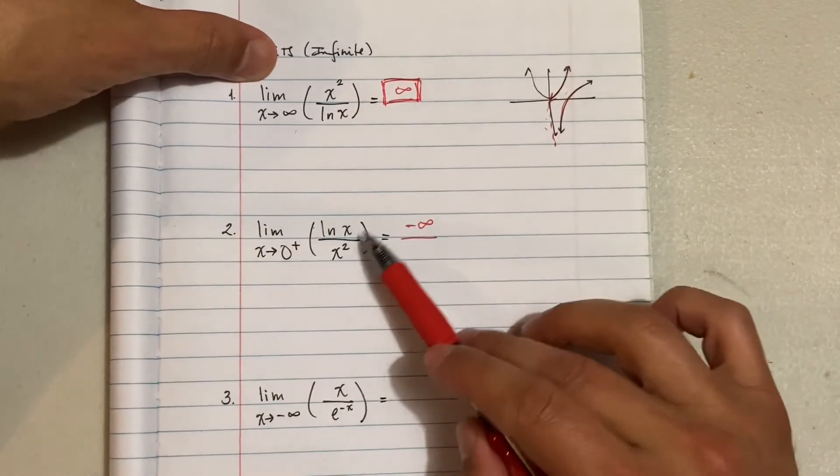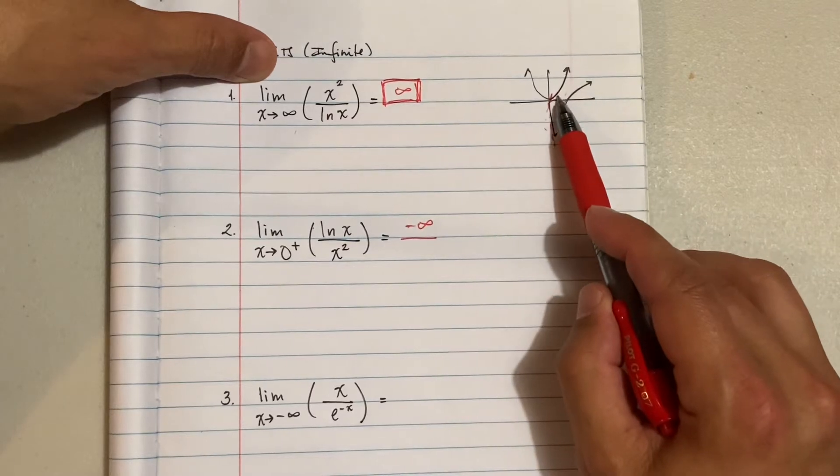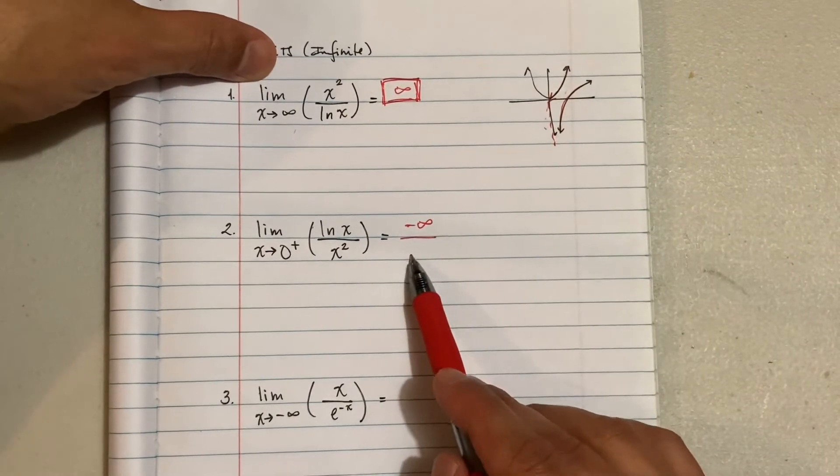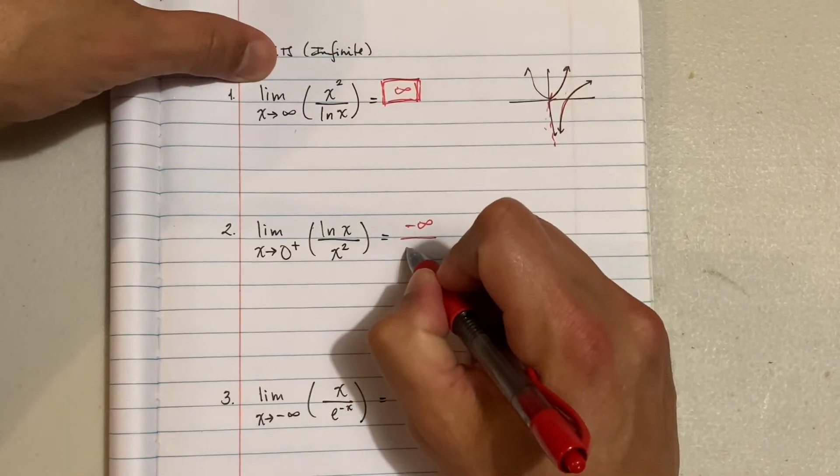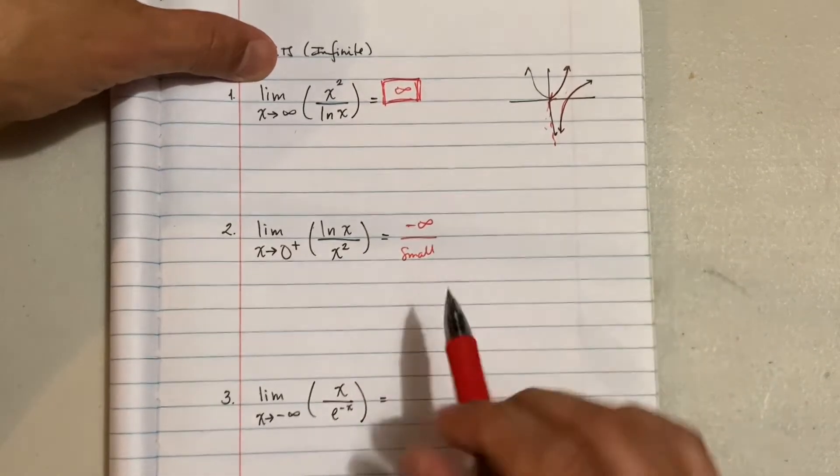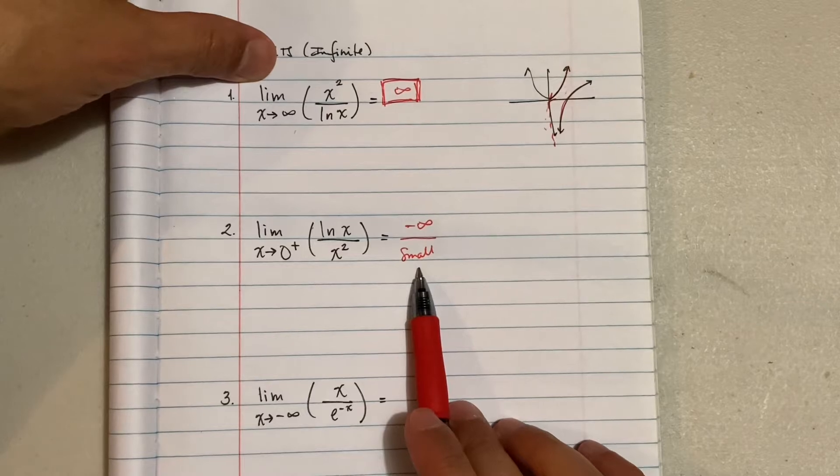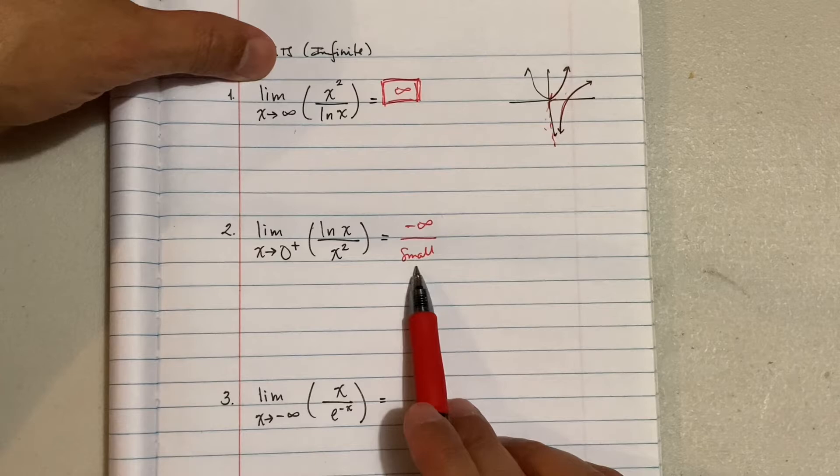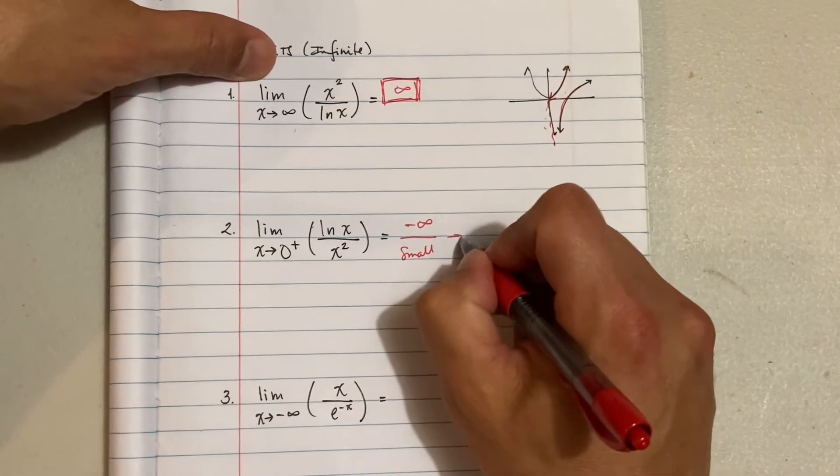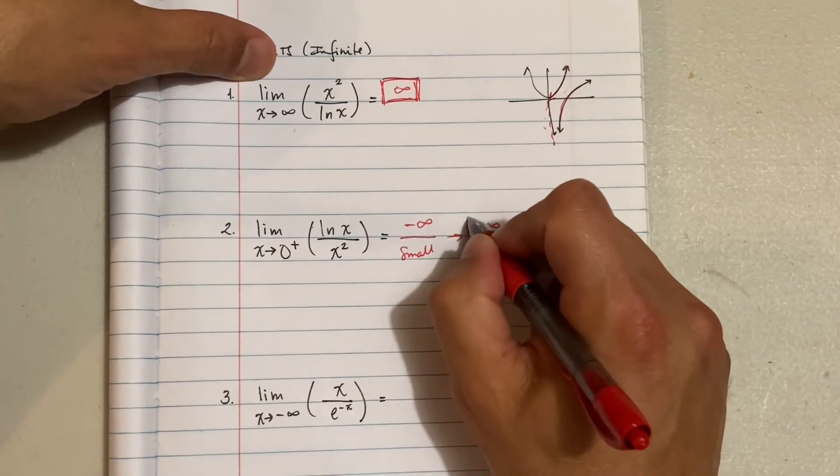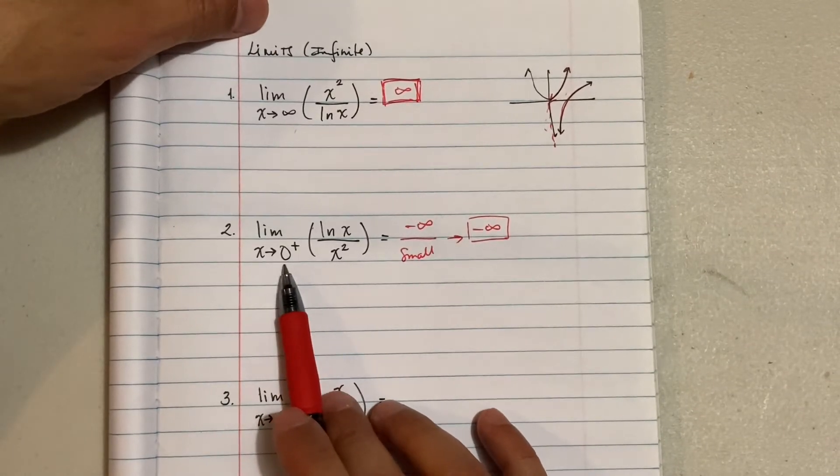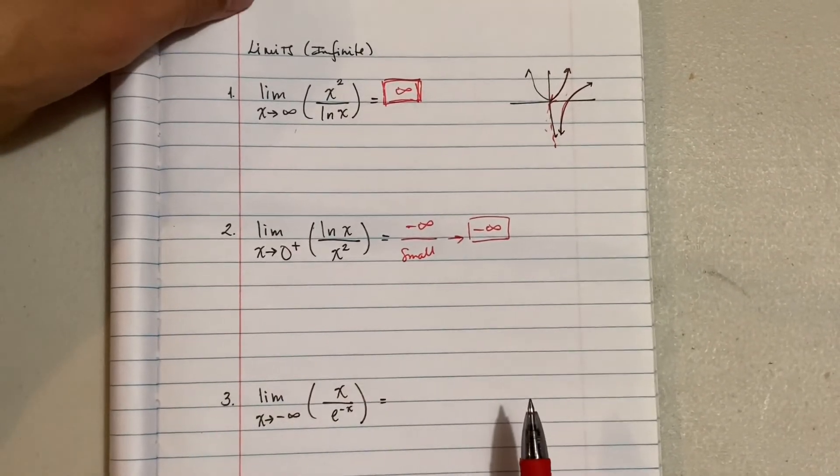What is x squared approaching? Well, x squared is approaching zero. It's getting very, very small. Now remember, it doesn't get to zero. It's just getting very, very small. So what happens when you have a negative number divided by something very, very small? Well, you're going to end up with negative infinity. Remember, this is a limit. It never gets to zero. It only approaches it.